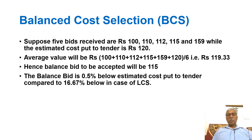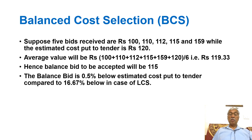As another example, suppose five bids are received as 100, 110, 112, 115, and 159 — where one bid value is very high — and the estimated cost put to tender is 120. The average works out to 119.33, so the balanced bid accepted is 115, which is only 0.5 percent below the estimated cost. In LCS this would be 16.67 percent below, and the very high bid of 159 is also excluded from consideration.